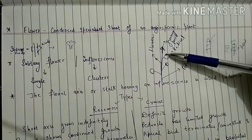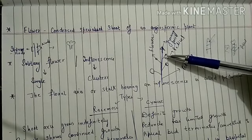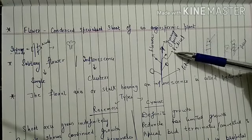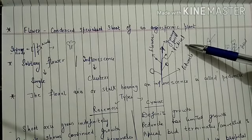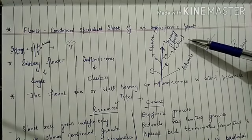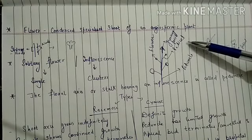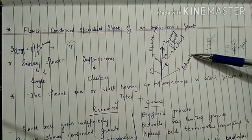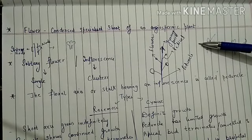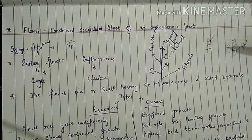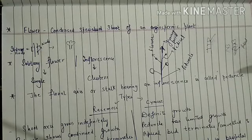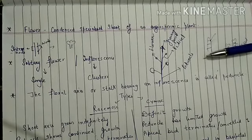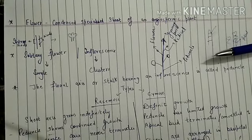The stalk of a single flower is known as pedicel, while peduncle is the stalk of the entire inflorescence. Now let us see the two types of inflorescence: racemose and cymose inflorescence.